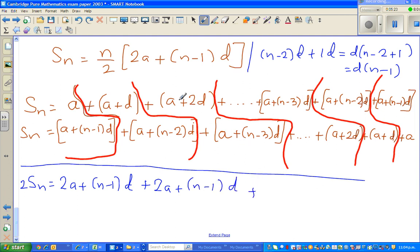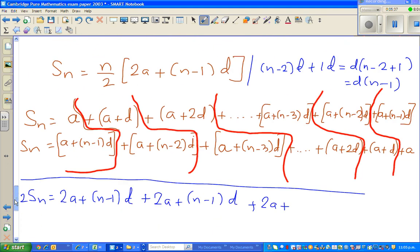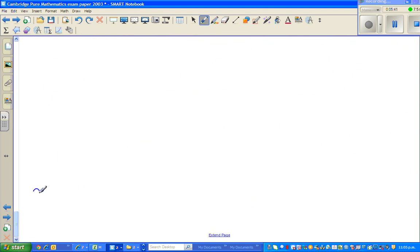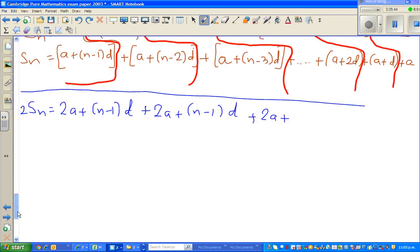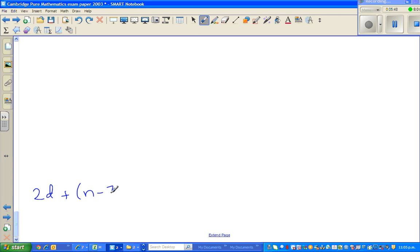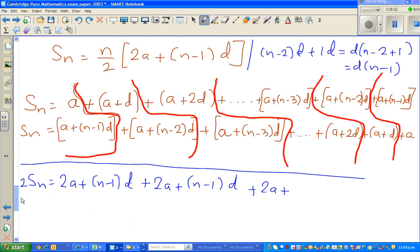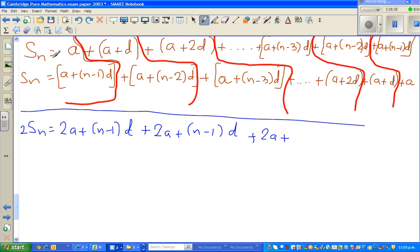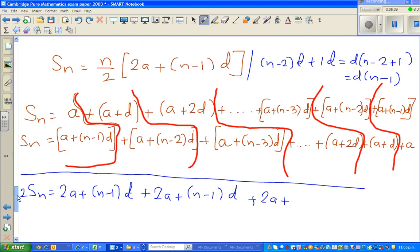Now, look at this. A plus A is 2A. Now, what is 2D plus N minus 3 times D? It's 2D plus N minus 3 times D. If you factor out the D, that is 2 plus N minus 3, which is again D times N minus 1. For the first group, it's 2A plus N minus 1D. We saw the second group is also this, the third group is also N minus 1 times D.